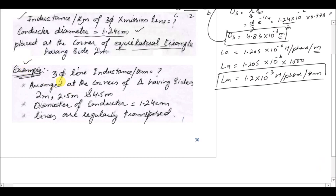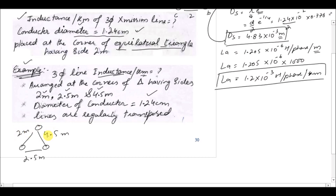In the second question, we have a three-phase line and again need to find the inductance per kilometer. The conductors are arranged at the corners of a triangle whose sides are 2 meters, 2.5 meters, and 4.5 meters, with the same conductor diameter of 1.24 centimeters. We assume the lines are regularly transposed. Drawing the triangle: sides are 2.5 meters, 4.5 meters, and 2 meters — conductors labeled 1, 2, and 3.